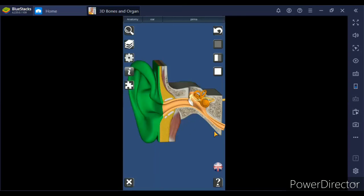So how do we hear? Pinna collects the sound waves and conduct them into the auditory canal. From the auditory canal, it strikes on the eardrum. And because of that, eardrum vibrates. The vibration of eardrum sets the three ear ossicles into vibration.